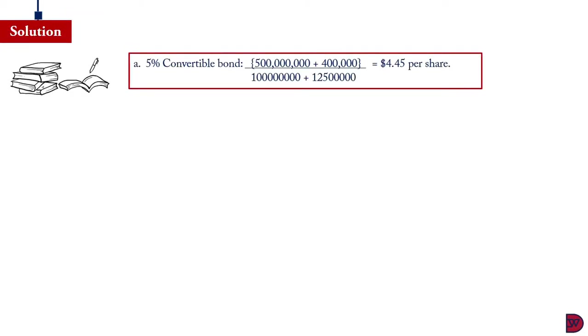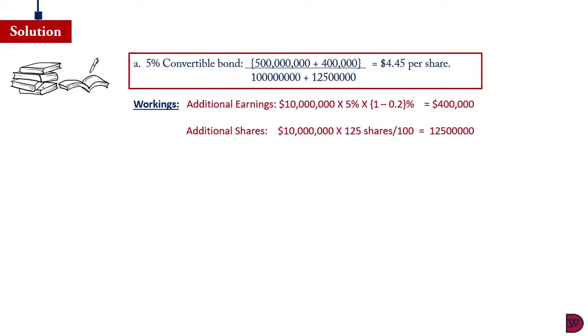For the solution, the first one, which is the convertible bond, $500 million in earnings will be there, plus the $400,000. The convertible bond attracts an interest of 5%. But because we are assuming that it is converted into shares, we do not have to pay that money again. It becomes a savings. 5% of the $10 million is $500,000, and this will increase the revenue or the profit for the business, which will attract 20% tax. So the net savings will be $400,000. When we come to the denominator, for the question we said that for every $100 of the convertible bond, 125 shares will be issued. The value of the convertible is $10 million. When you divide by the 100 and multiply by 125, you're going to get 12.5 million shares issued for the convertible. The diluted earnings per share is going to be $500 million plus $400,000 divided by 100 million shares plus 12.5 million shares. The diluted earnings per share will be $4.45.